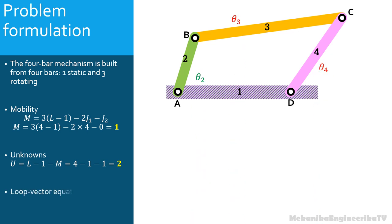As the problem has 2 unknowns, 1 loop vector equation is required. A loop vector equation gives 2 scalar algebraic equations, which is the same number as unknowns.